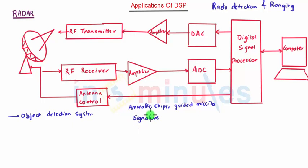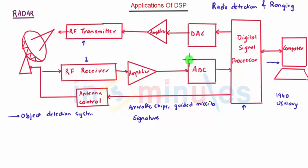Radar was formed in 1940 by the US Navy and was first initially used for defense systems. The major components of Radar are the digital signal processor, which is interfaced to a computer, the RF transmitter and receiver, and the analog to digital converter and digital to analog converter.